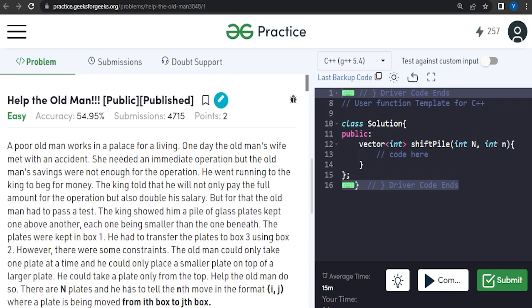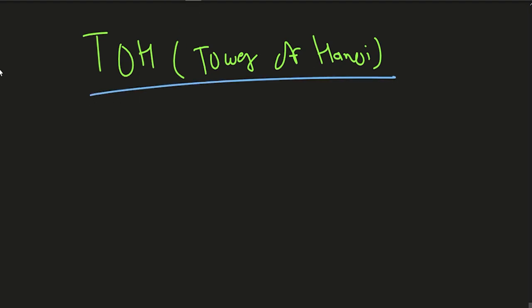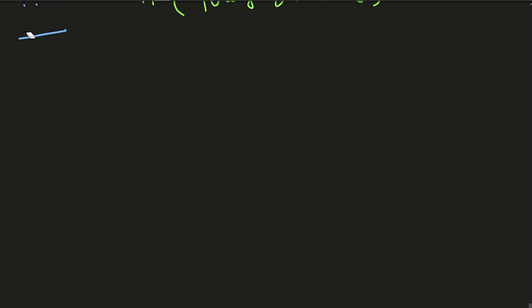You have to help the old man. Suppose there are n plates — you will be given the nth move and in that nth move you have to tell what combination is going to be used. If you focus on this problem completely, this problem is nothing but Tower of Hanoi. So I'll explain the original Tower of Hanoi problem. Let's forget this problem statement for now and observe what we have to do in Tower of Hanoi.